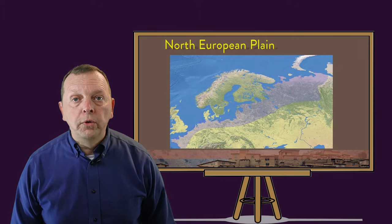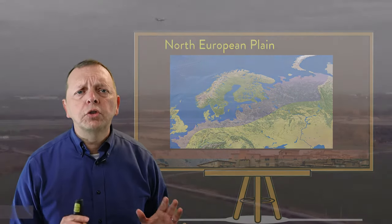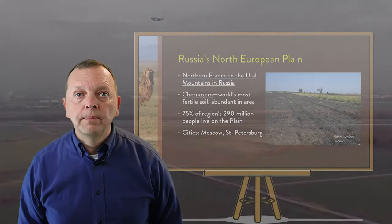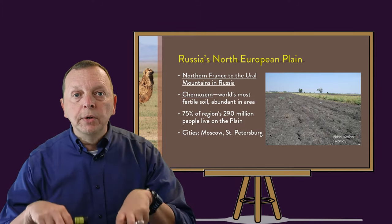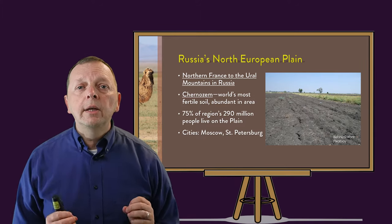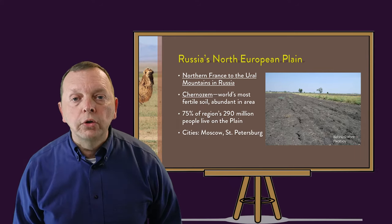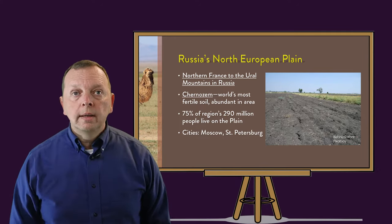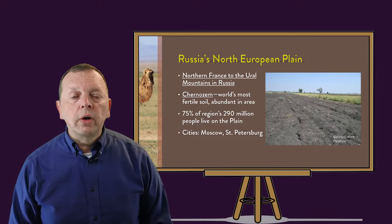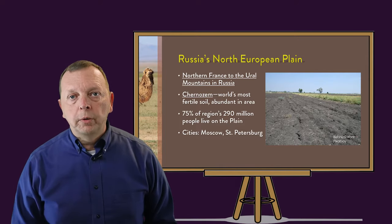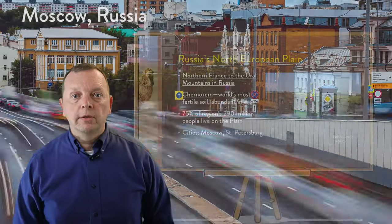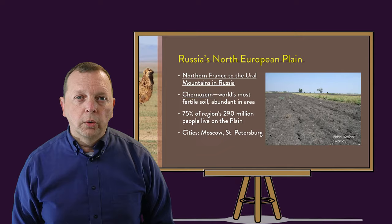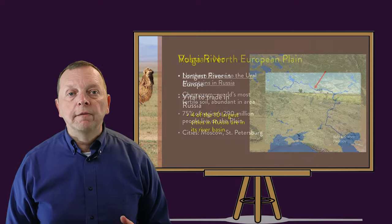Starting in western Russia, we find the North European Plain, which is a stretch of extremely fertile agricultural land that extends from France all the way into Russia. The fertility of the land is caused by loess, which is a windblown sediment. The deposition of this has created a dark-colored soil known as chernozem, which is one of the most fertile soils in the world. Due to its value to agriculture, it is in Russia's part of the North European Plain that we find 75% of Russia's population, including the cities of Moscow and St. Petersburg.